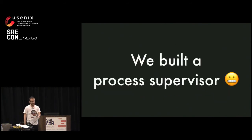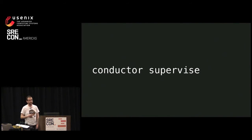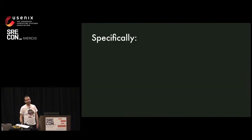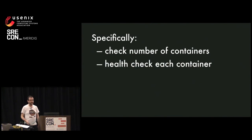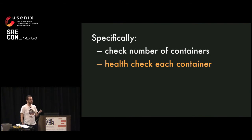So we built a process supervisor called Conductor Supervise. The way it works is fairly simple, fairly naive, but fits the properties we wanted. It works by observing the current state of containers, replacing them if anything looks wrong, and trying to bring the world in line with the service definitions on each node. Specifically, it checks the number of running containers and health checks each container over HTTP. I want to stop there for a minute because this is a whole thing with process supervision that I think is missed by even most other process supervisors including Systemd: just because a process is running doesn't mean it can do useful work. You could have something that's totally unable to respond to requests but the OS hasn't killed it yet. I really wish more process supervisors would have hooks that let you do stuff like this.